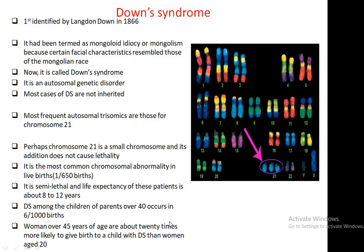As we know, human beings have 23 pairs or 46 chromosomes. Among these, 44 are autosomes and 2 are sex chromosomes. This is the karyotype of a human. Here you can see chromosome number 21 — there is a trisomy, meaning an additional chromosome is present at chromosome 21. Instead of 2, here there are 3.